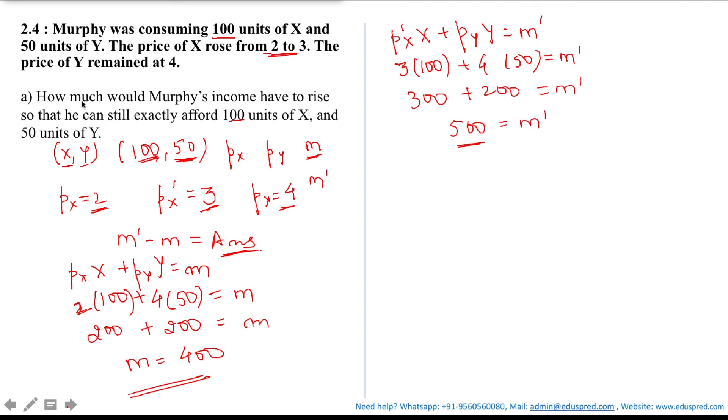The question asks how much Murphy's income have to rise. So let's calculate this, that would be M dash minus M which is 500 minus your M is 400, this is 100. Thus Murphy income have to rise by 100 units so that he can still afford 100 units of X and 50 units of Y.